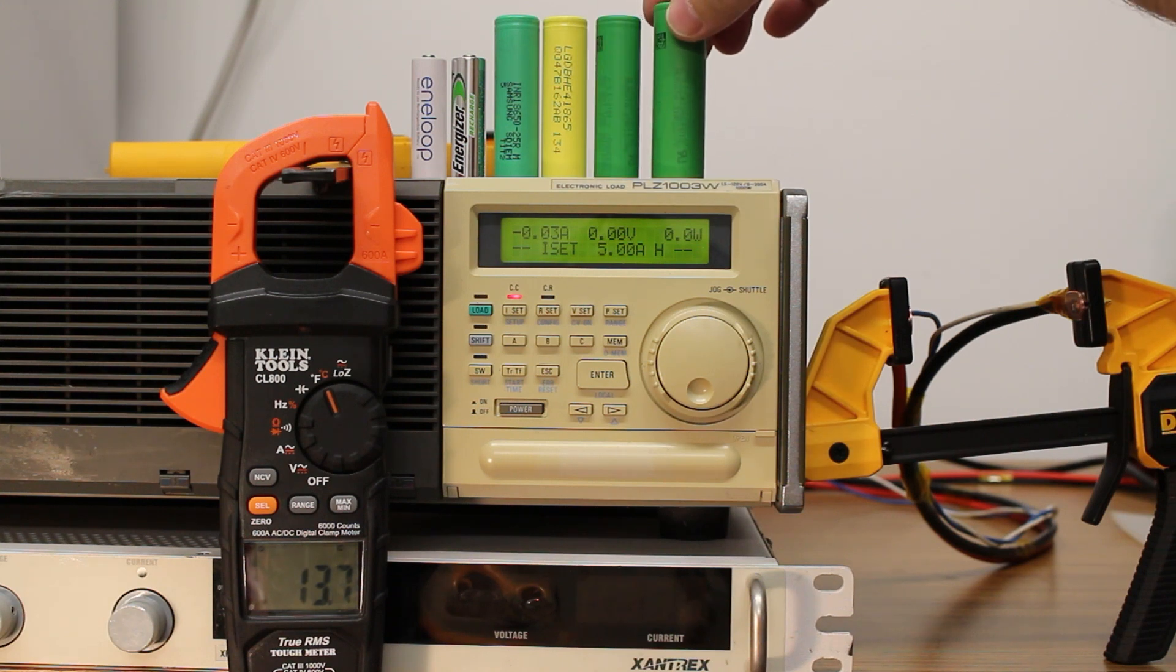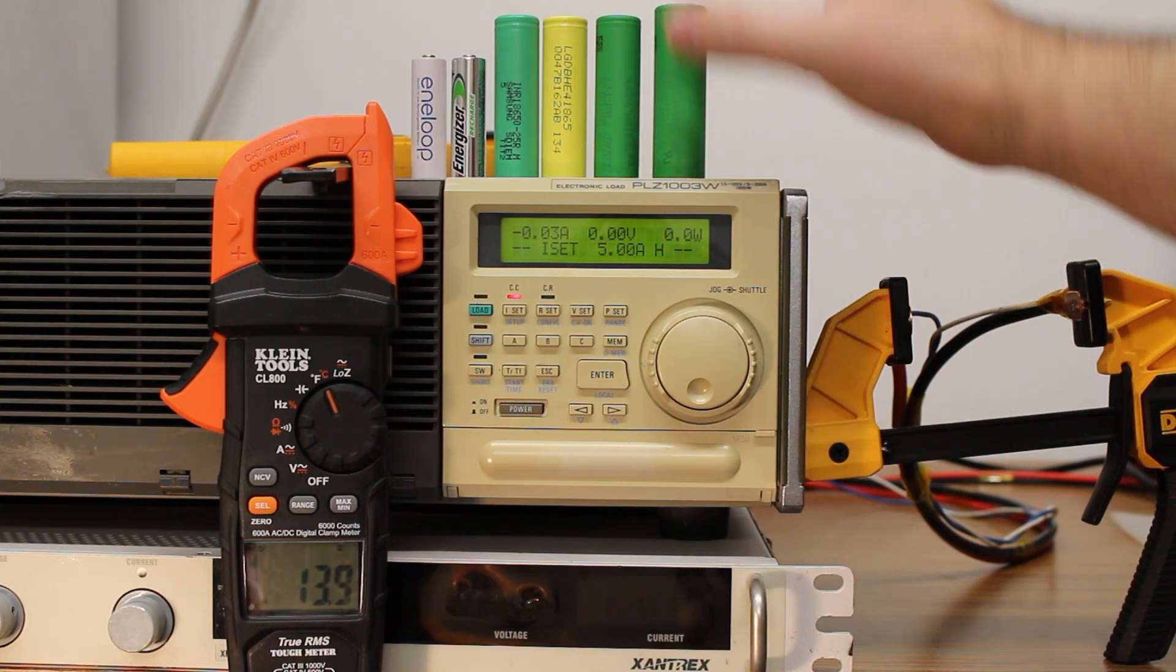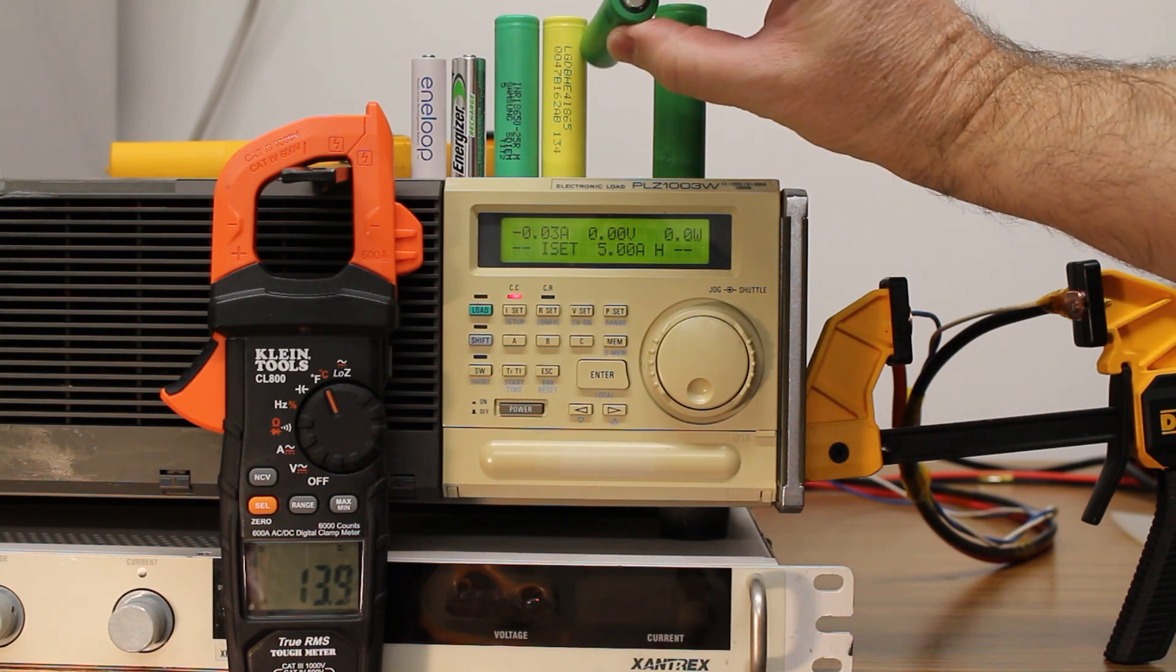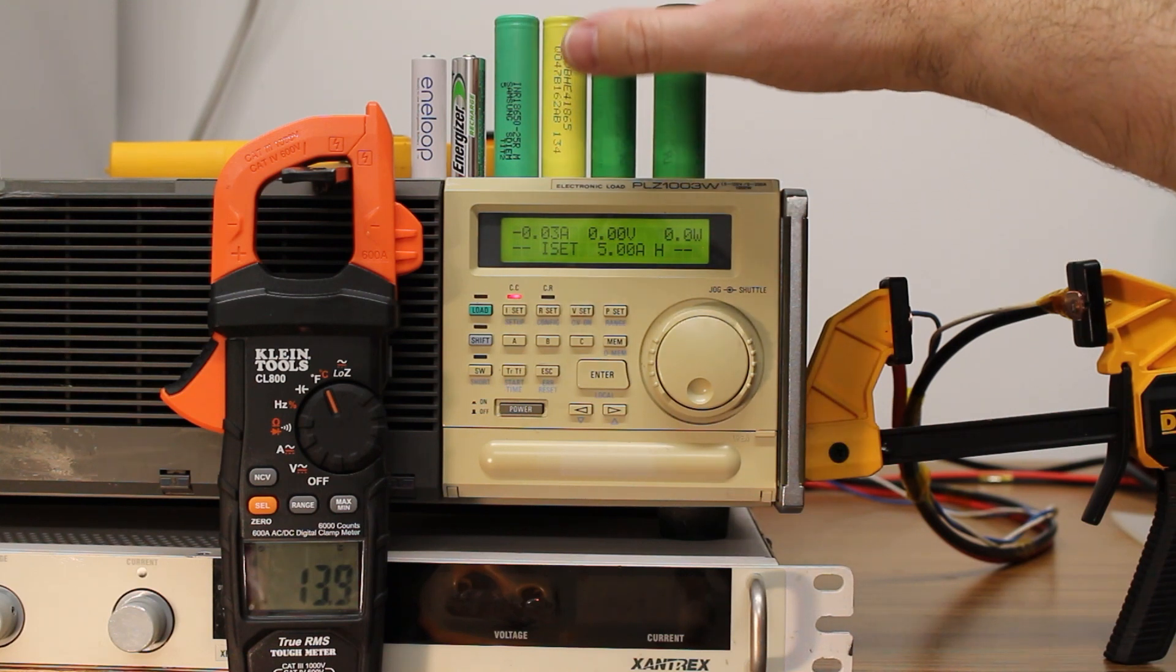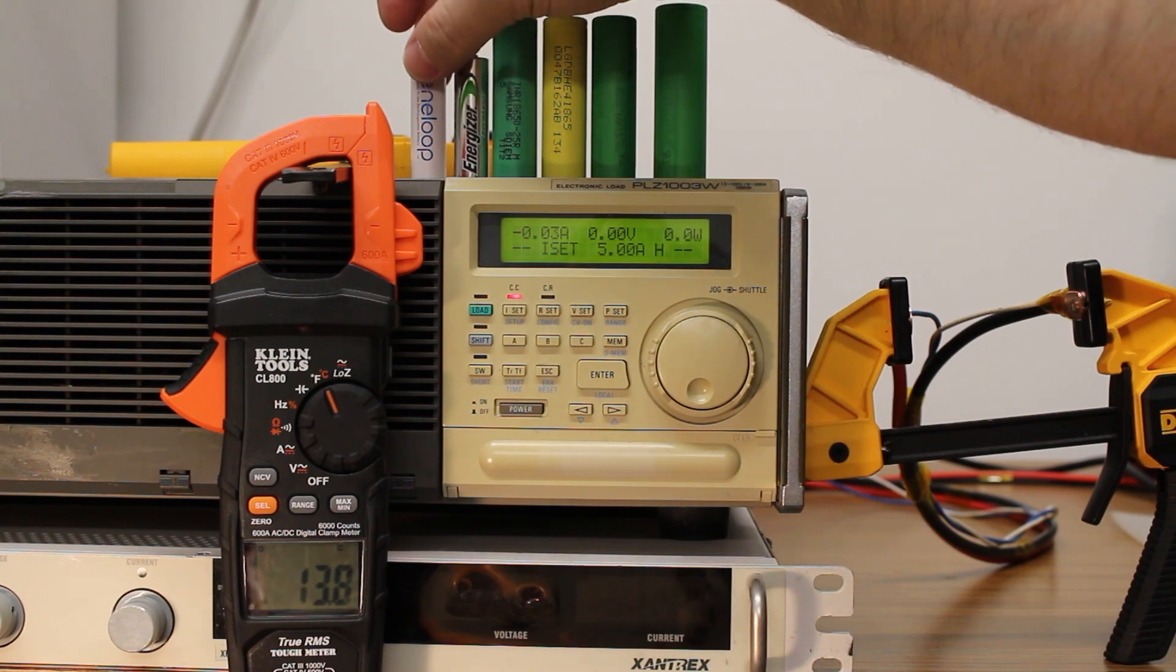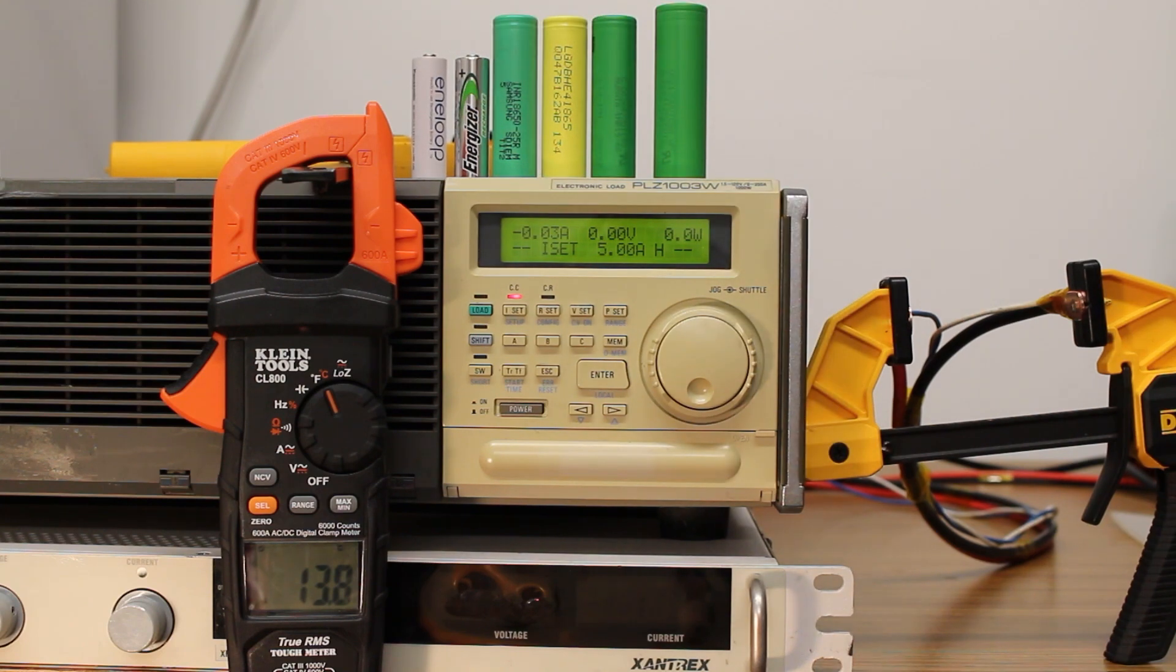Then we've got the Sony VTC6A. This is a 2170 cell. That's 21 millimeters diameter and 70 millimeters long. The 18650 batteries are 18 millimeters in diameter and 65 millimeters long. Then we've also got some household variety batteries, an Energizer AA battery and a Samsung Eneloop AA battery. We'll see how these perform. Let's get into the test.